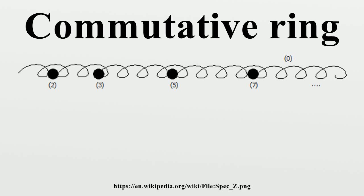An important example, and in some sense crucial, is the ring of integers Z with the two operations of addition and multiplication. As the multiplication of integers is a commutative operation, this is a commutative ring. A field is a commutative ring where every non-zero element is invertible. Therefore, by definition, any field is a commutative ring. The rational, real and complex numbers form fields.